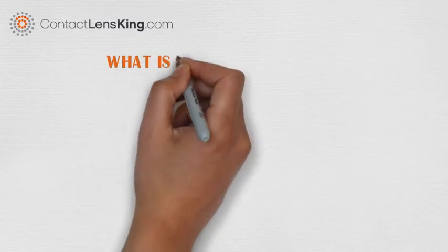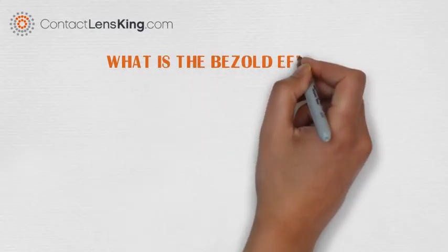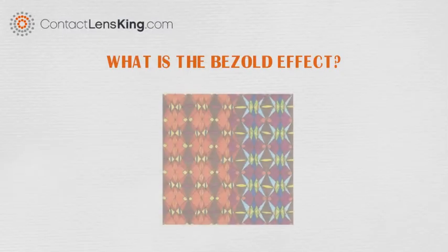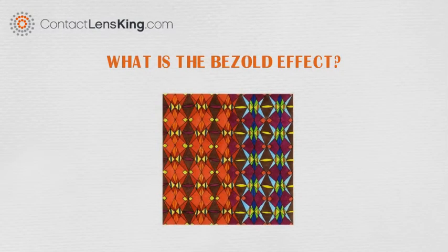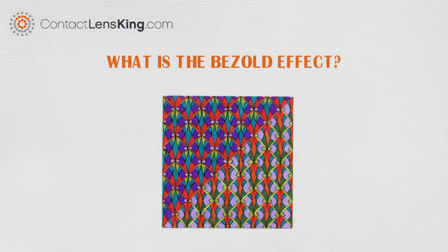Contact Lens King presents: What is the bezeled effect? The bezeled effect is a premise that describes how our perception of color is impacted by surrounding colors. By simply substituting a single color in an image, it can cause the other colors to appear altered.